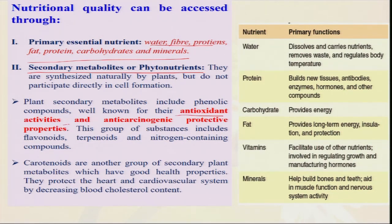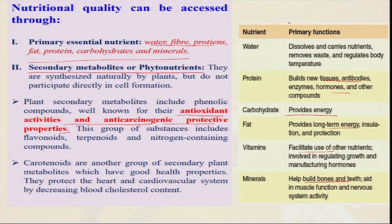All nutrients have primary functions: water has a certain role, protein is the building block, carbohydrate always provides energy, fat also provides long-term energy, and vitamins and minerals are necessary. Always we have to take care of how we are maintaining a balanced diet. In this condition, kitchen garden plays a very major role, because every time we cannot purchase from the market — there may be monetary issues, transportation issues, or the husband may be away for work for seven to ten days. If they maintain a kitchen garden near the house, they can easily harvest and use quality food.